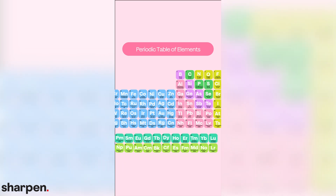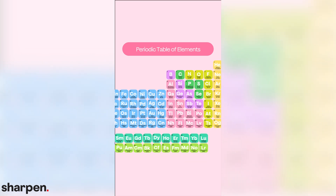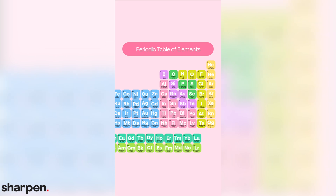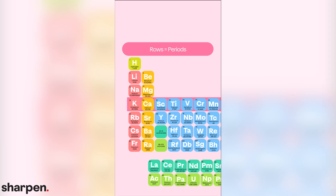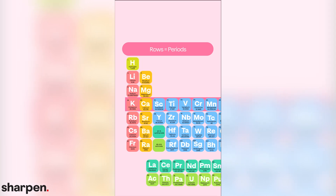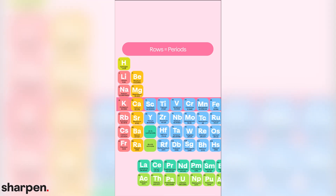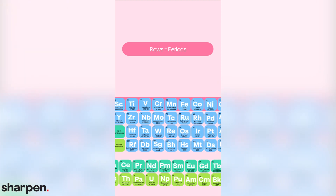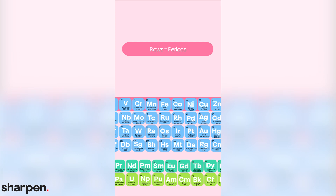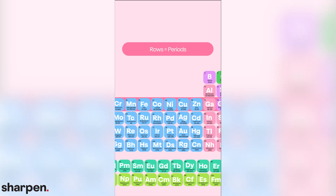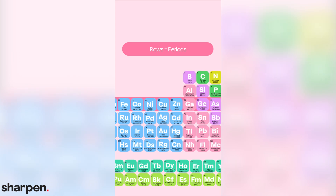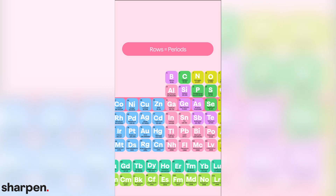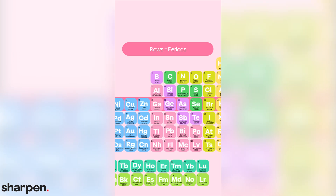The periodic table is organized in a specific manner — you just have to learn what to look for. First and foremost, elements in rows, also known as periods, are close in proportion. So in the first period, hydrogen and helium are all that's represented, because these two elements are closer in size compared to the rest. And it should be noted that almost all elements found in organic compounds can be found in the first two periods of the table.